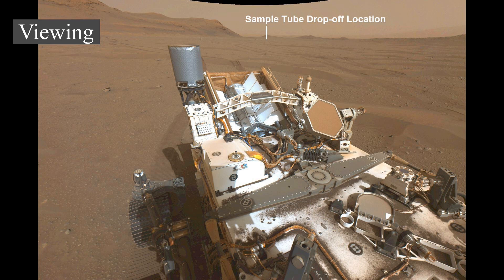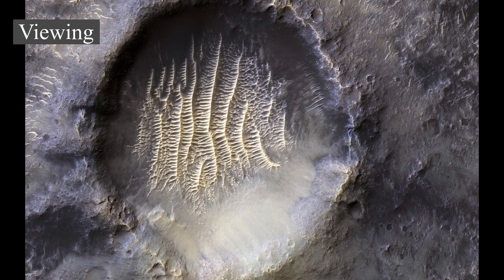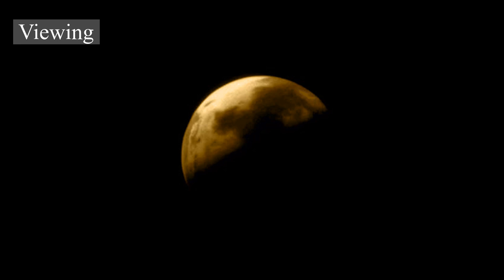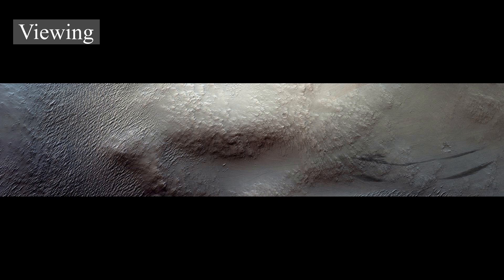As Mars approaches opposition, it begins a period of retrograde motion, appearing to move backwards in a looping curve with respect to background stars. This retrograde motion lasts for about 72 days, and Mars reaches its peak luminosity in the middle of this interval. The point at which Mars's geocentric longitude is 180° different from the Sun's is known as opposition, which is near the time of closest approach to Earth. The time of opposition can occur as much as 8.5 days away from closest approach. The distance at close approach varies between about 54 and 103 million km due to the planets' elliptical orbits.